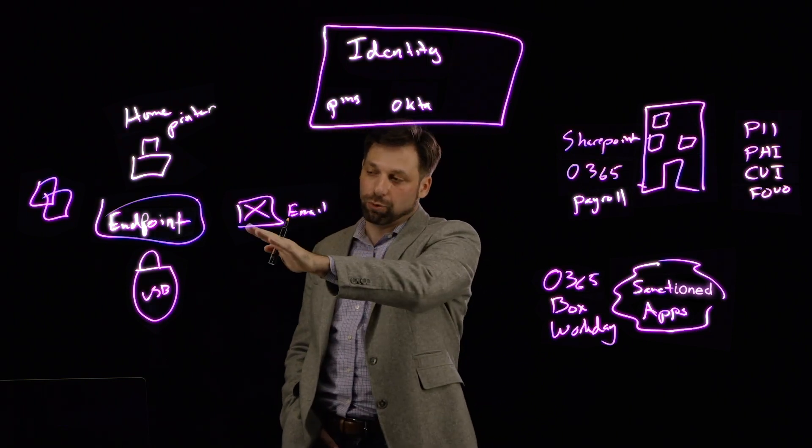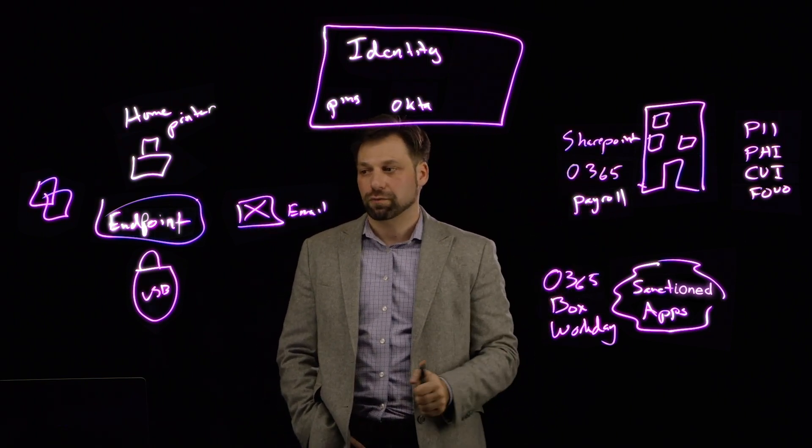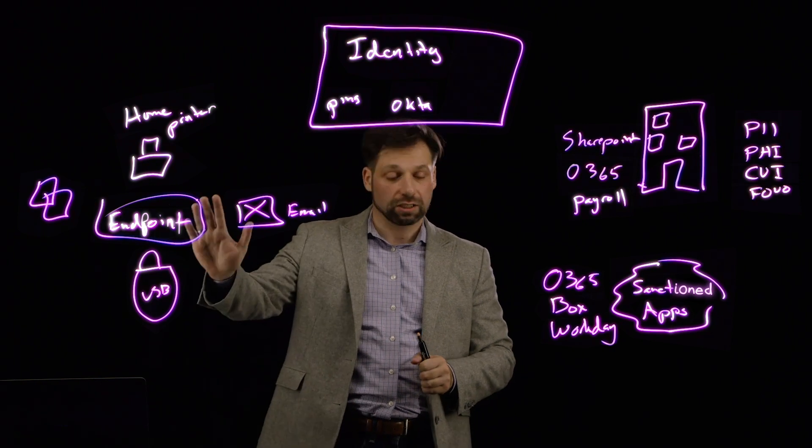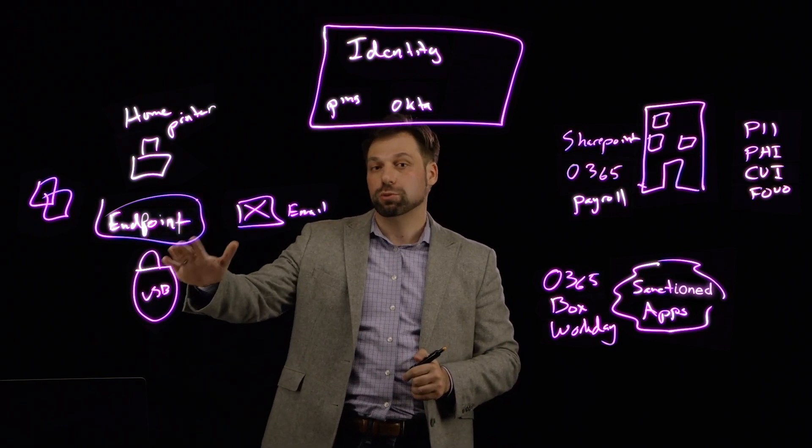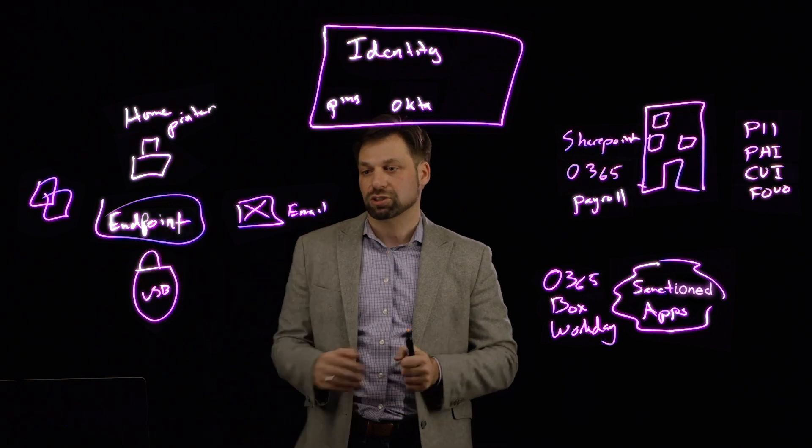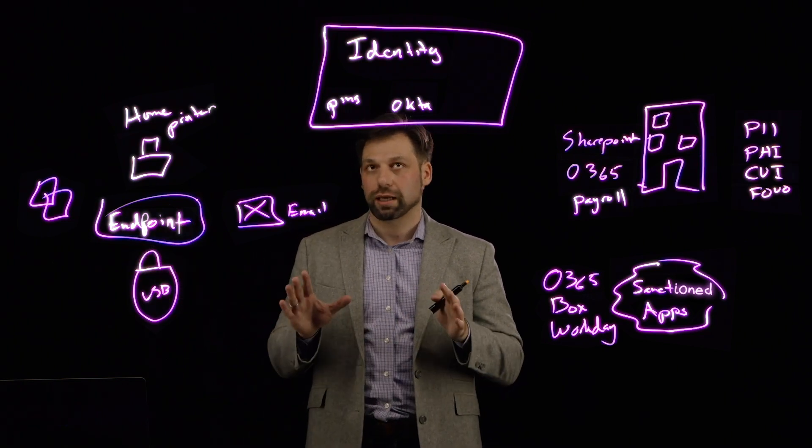What happens now when you've got to worry not just about where they're coming from, not just verifying the endpoint, verifying what data they're accessing. You've got to verify if that user that's at home is it the user, is it their children, or is it someone pretending to be that user that's actually malicious?